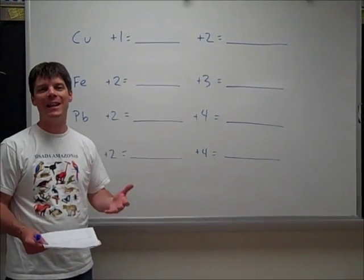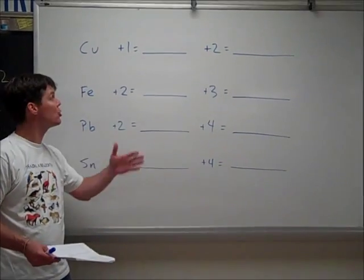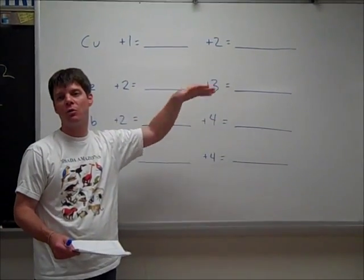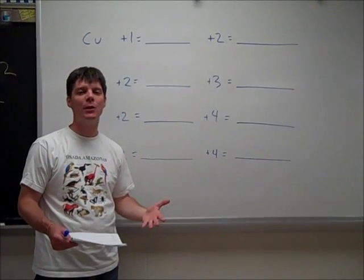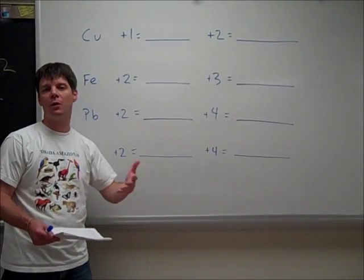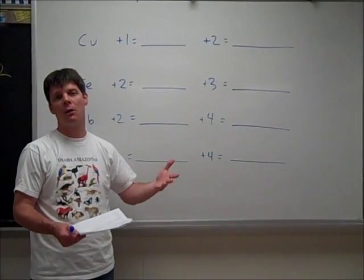This time we're going to be talking about the Latin naming system. This is an alternate way to let someone know what is the charge of one of those metal ions where there's more than one possible oxidation state. This is not commonly used anymore, however, we do cover it just to make sure that students, if they see it, understand what it means and how to recognize it.